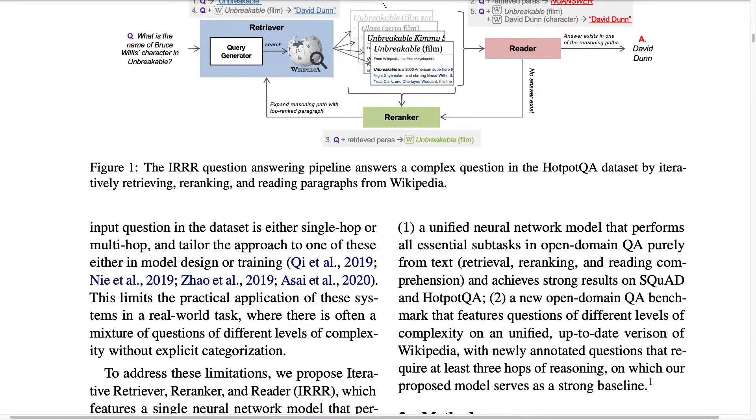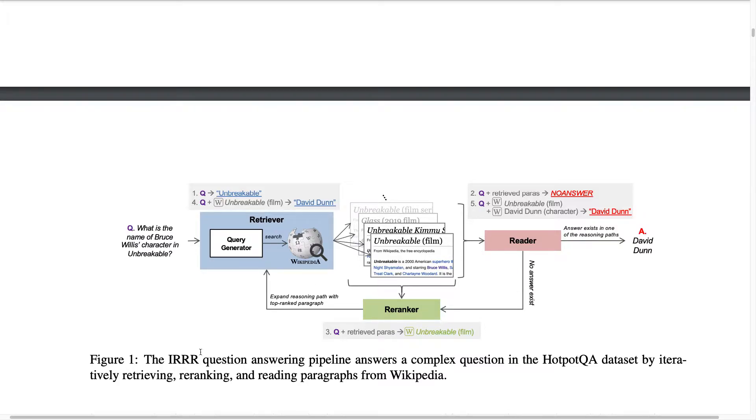How does this work? Here we have an illustration regarding how this model called IRRR works. Basically given that you have a question that is sophisticated, let's say what is the name of Bruce's character in Unbreakable which is a movie. The model consists of three components. You have a retriever model which is capable of generating a search engine query out of this question, formulating this query in a good way such that you can retrieve a lot of good paragraphs from a search engine. The authors use an Elasticsearch search engine which they create from all Wikipedia articles.